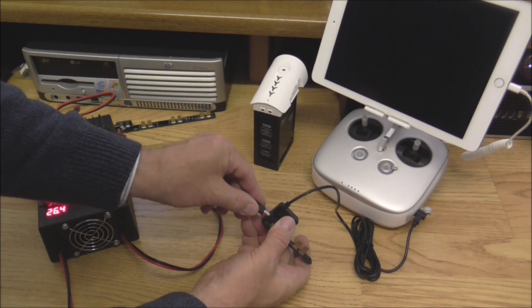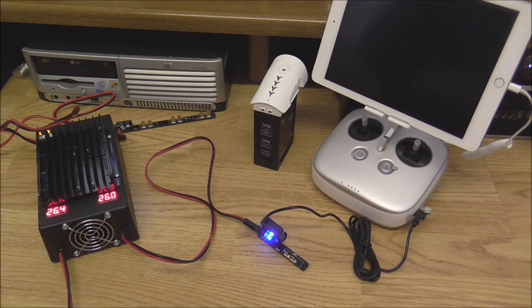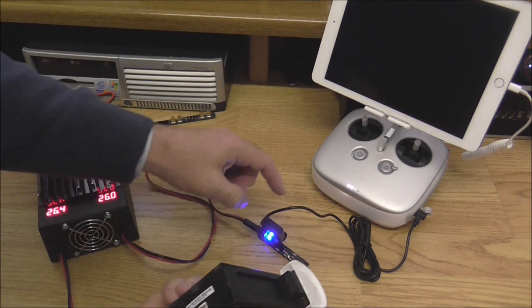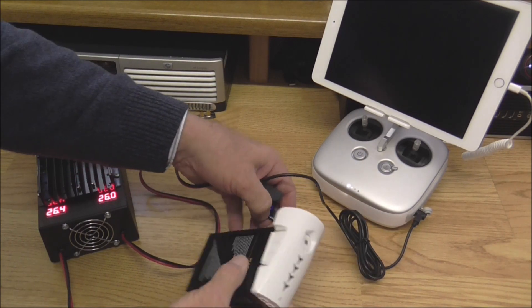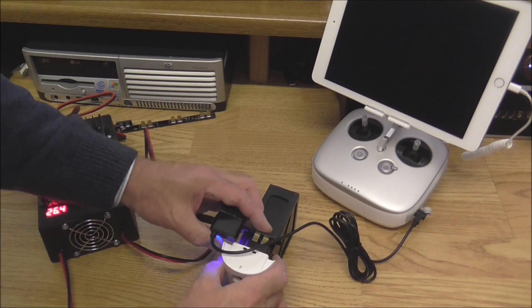As you can see here, we're just charging up the remote controller on its own. Now we can add the Inspire One battery and plug it in as you would normally to charge. This enables you to run both at the same time—the charging of the Inspire One battery and the remote controller.